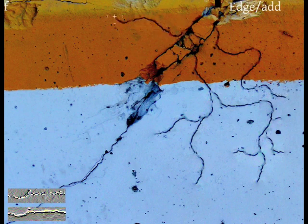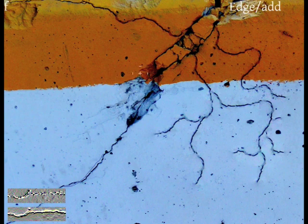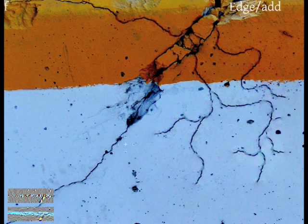The edge brush can also be used to select color differences. I select the color difference between the orange and white segments of the wall. I paint with this color difference to create another orange stripe.